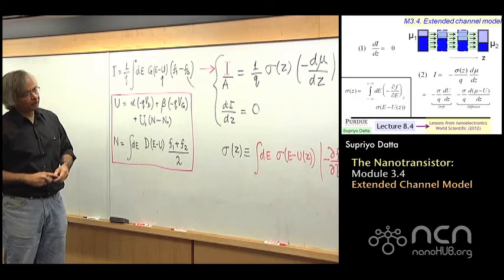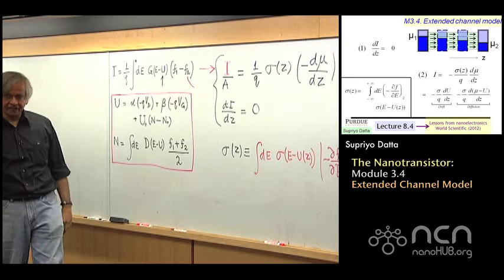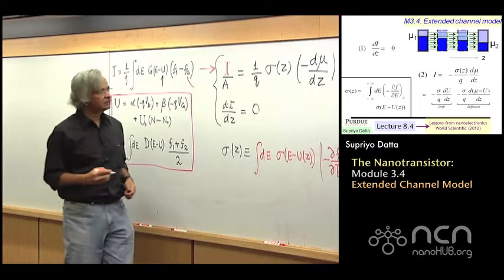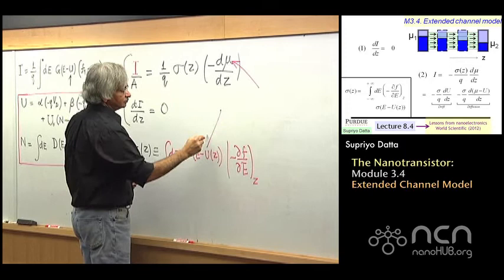I just wanted to give you a feeling for how that connects up. And one of the important points I want to make is that there are two types of potentials that enter this discussion — two concepts. One is mu and the other is U.